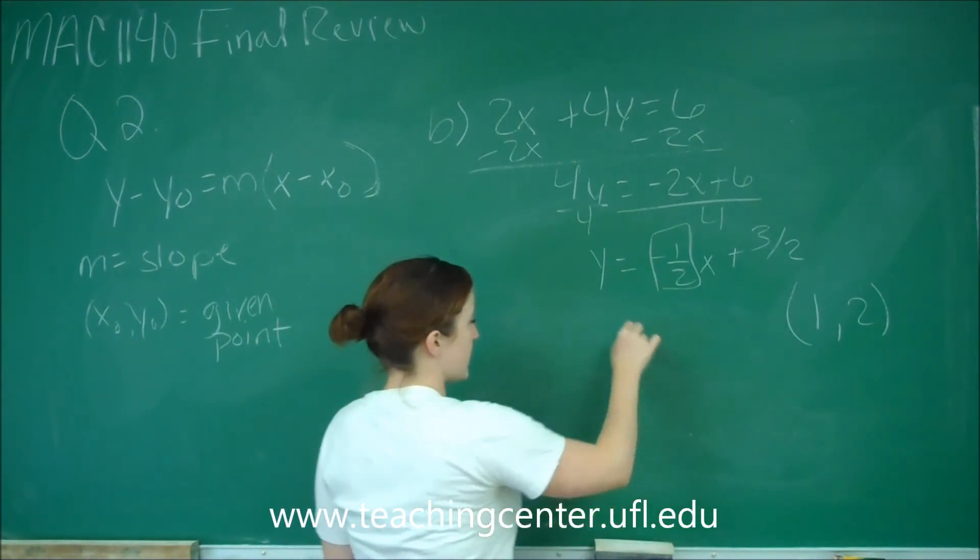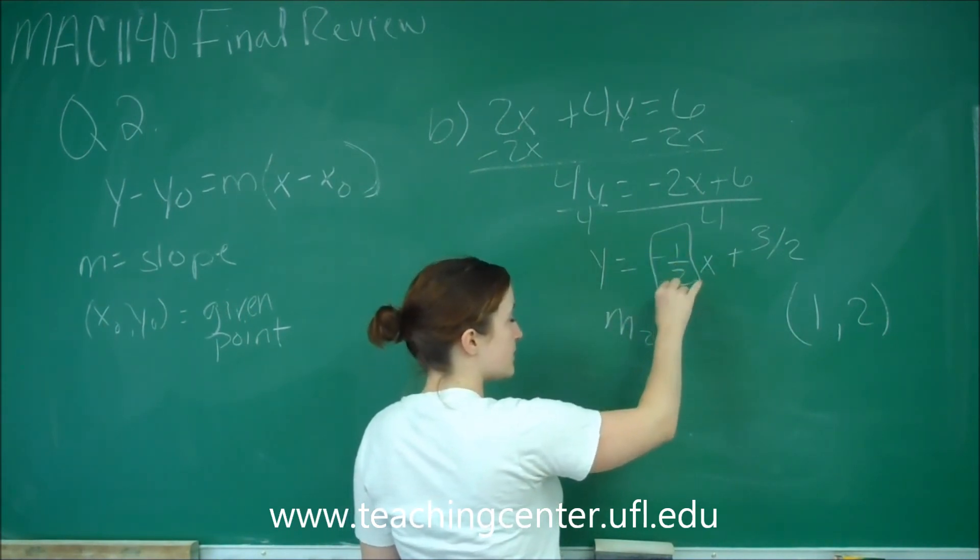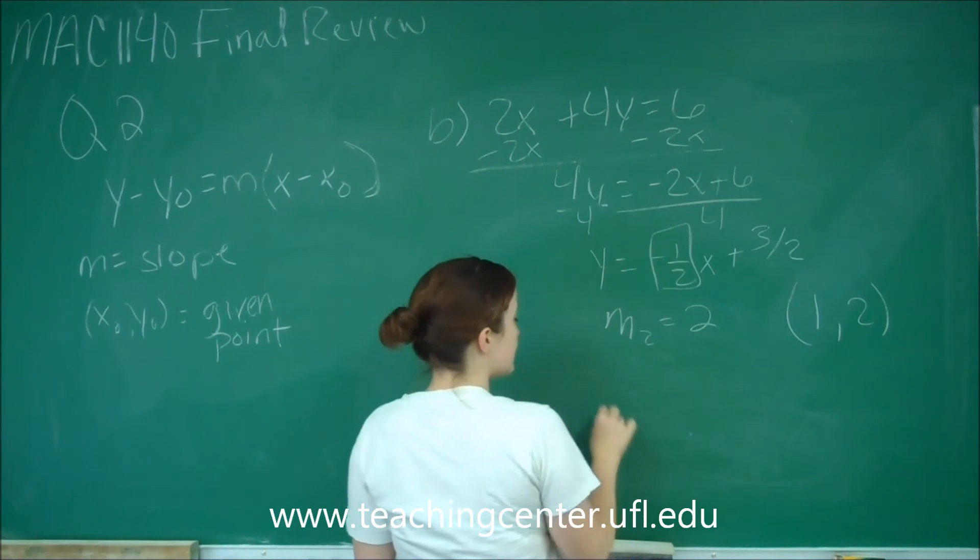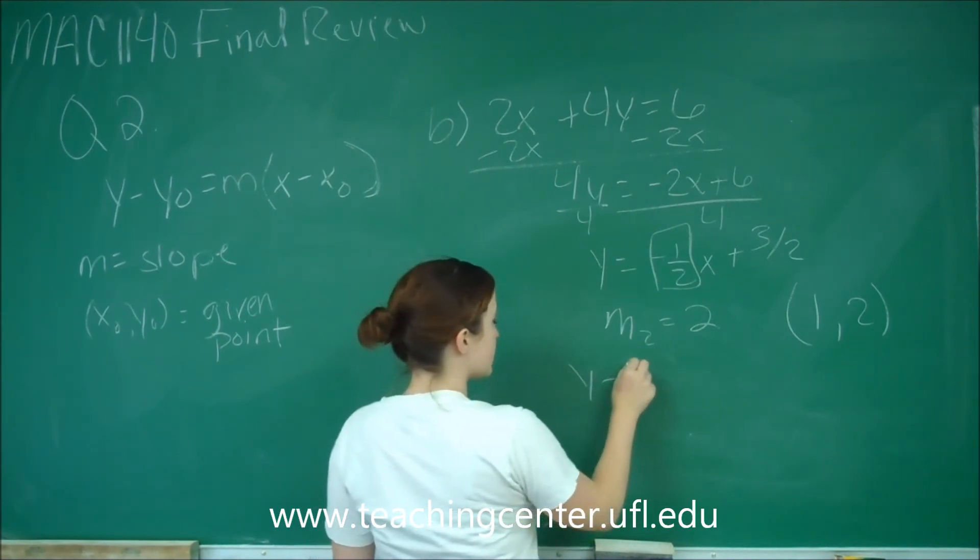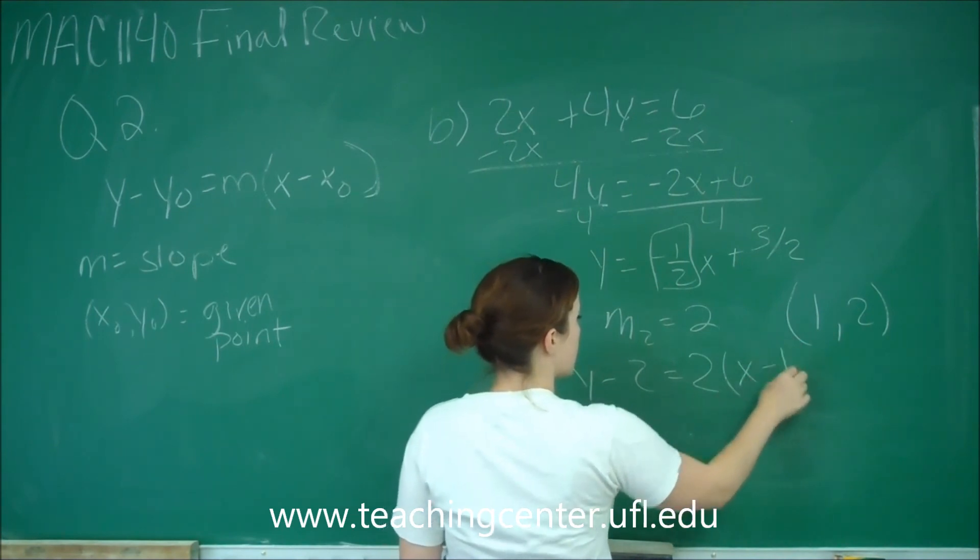So our new slope, m sub 2, is going to equal the negative of negative is positive, so it's going to be 2. So our new line is y minus 2 equals 2 times x minus 1.